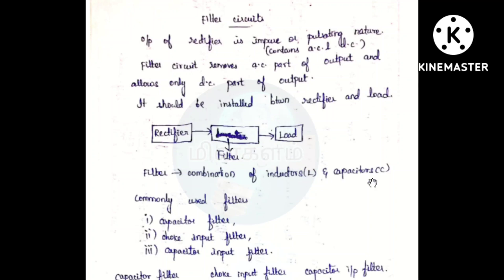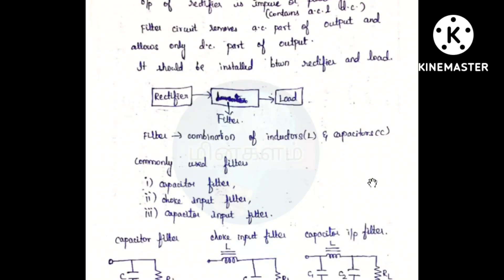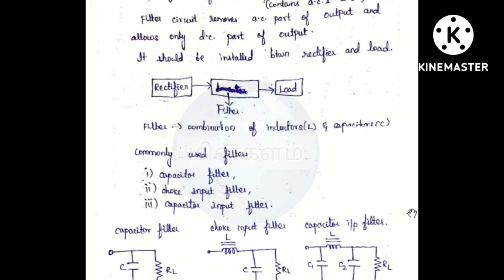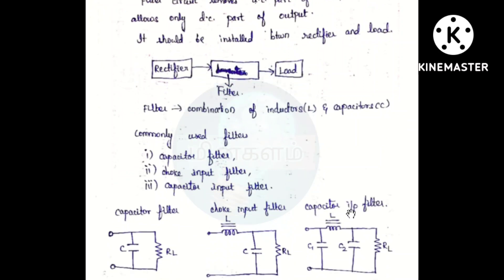In the filter, we use inductors and capacitors. There are many types of filters. What do you use in the filter? First, a Capacitor Filter. Second, a Choke Input Filter. Third, a Capacitor Input Filter. So there are 3 types of filters. We connect inductors in series and capacitors in parallel.